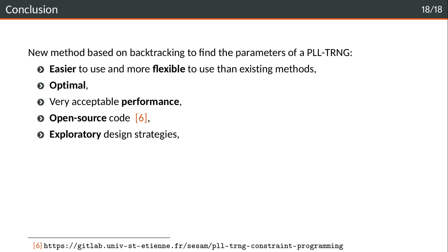To conclude, we propose a new method based on backtracking to find the parameters of a PLL TRNG. This method is very easy to use and it's much more flexible than existing methods. It is an optimal method which will always find the best parameters for a given set of constraints. It has very acceptable performance, usually runs in around the order of seconds or maybe tens of seconds sometimes. But it's very possible to actually run it multiple times to get a bunch of parameters.